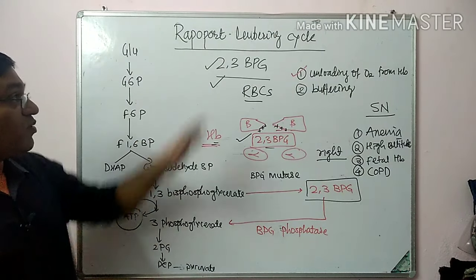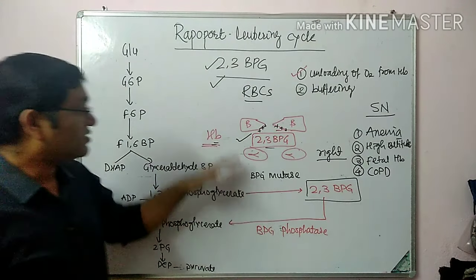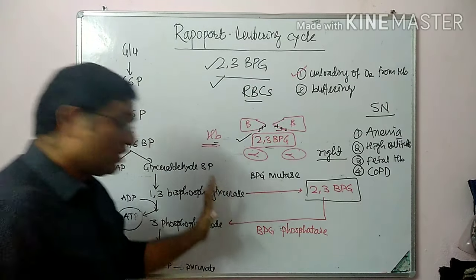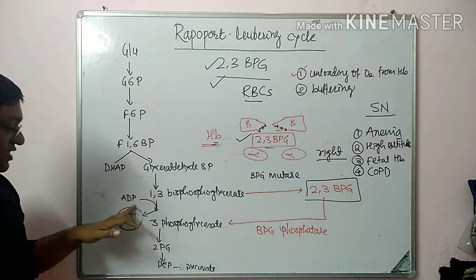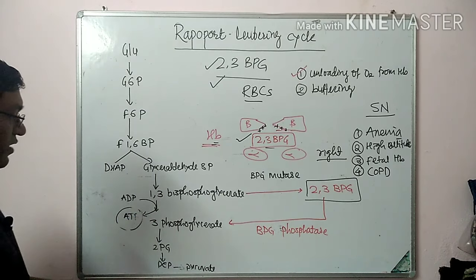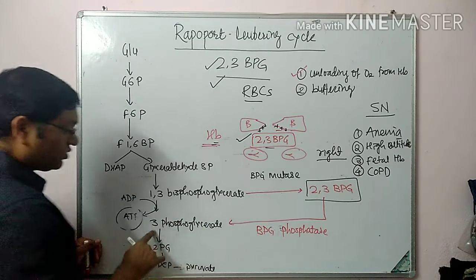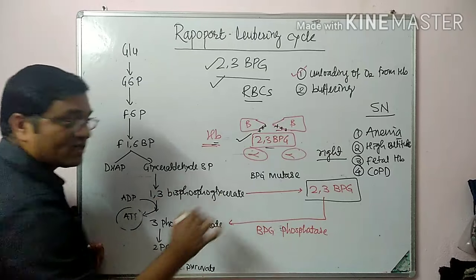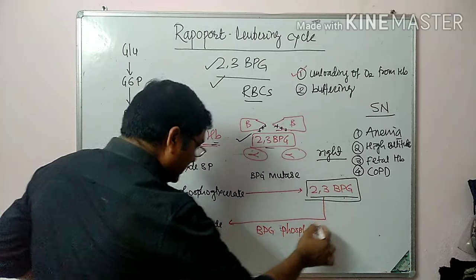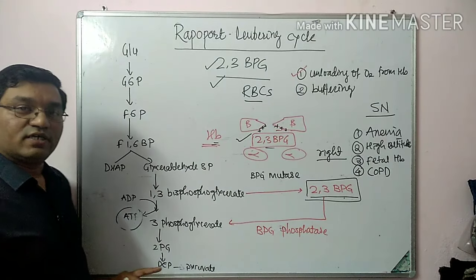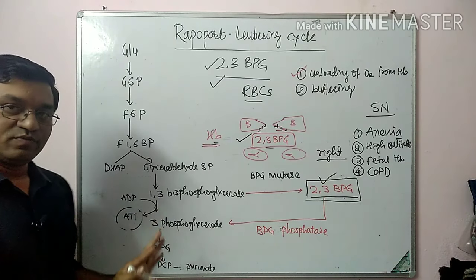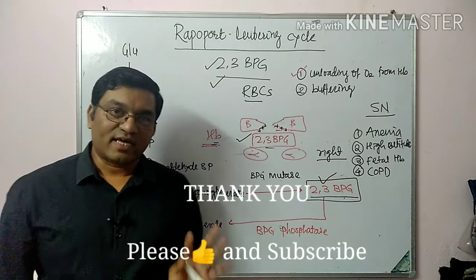2,3-BPG is synthesized in the Rapoport-Luebering cycle, a supplementary pathway for generation of 2,3-BPG in RBCs. In this pathway, there is less formation of one ATP, as the step in glycolysis involving conversion of 1,3-bisphosphoglycerate is bypassed, and instead 2,3-bisphosphoglycerate is generated and then degraded into 3-phosphoglycerate. This is all about the Rapoport-Luebering cycle.